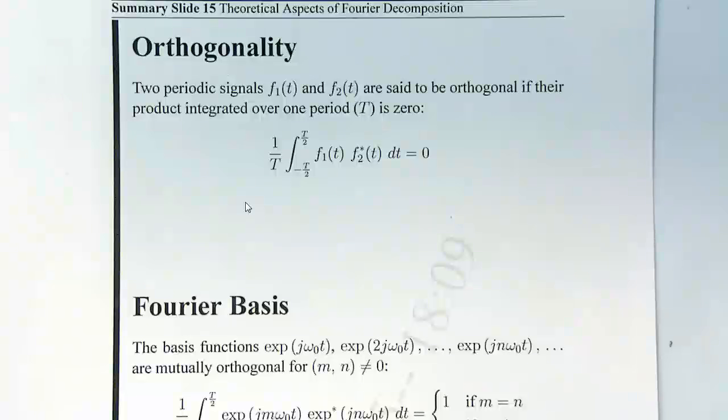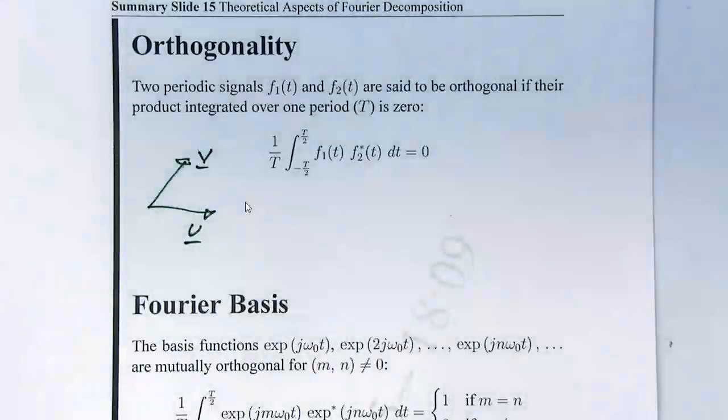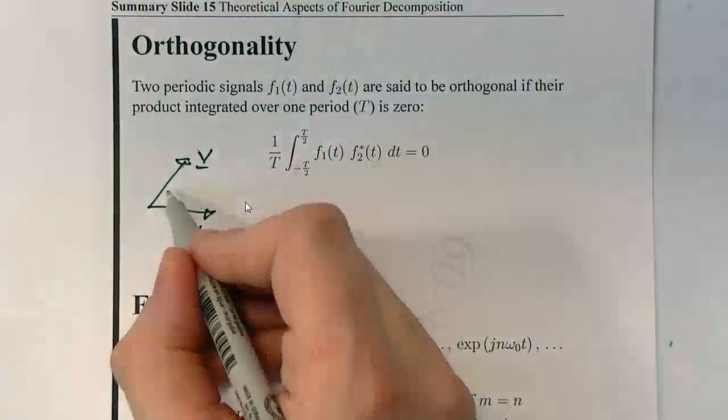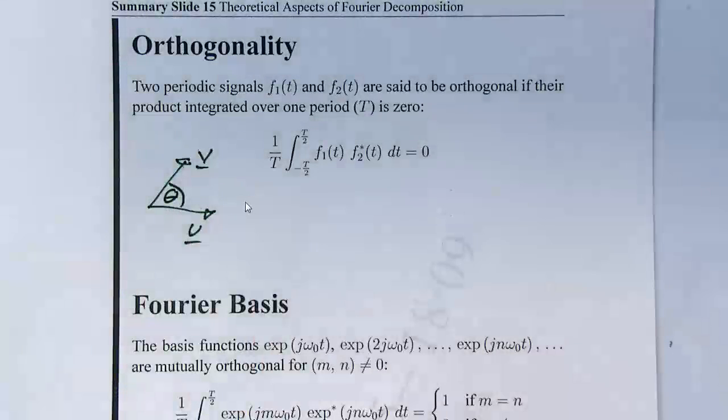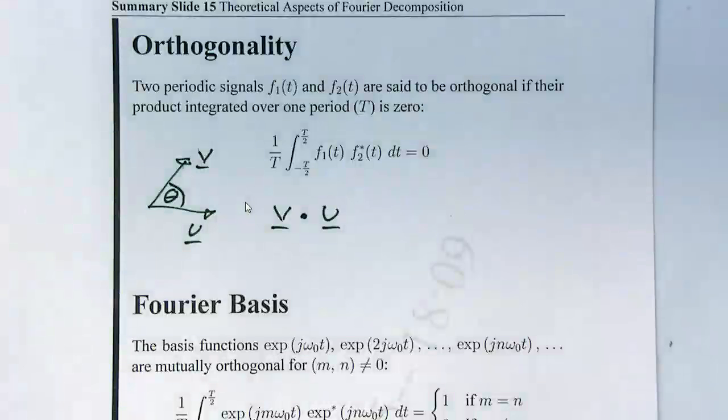The idea of orthogonality just parallels that for vectors. Basically, if two things are at right angles, they're said to be orthogonal. So if you imagine if you had two vectors, u and v, then they would be orthogonal if they were at right angles. And the question is, how do you measure the contribution of a component v in the direction of u? So this is just basic vector theory.